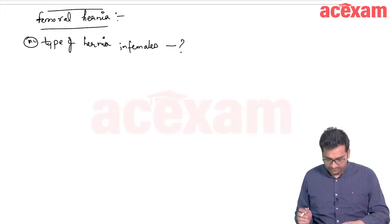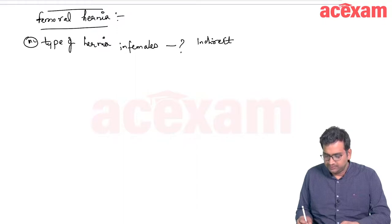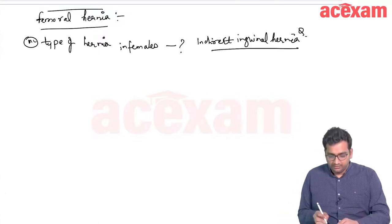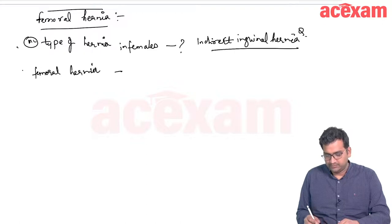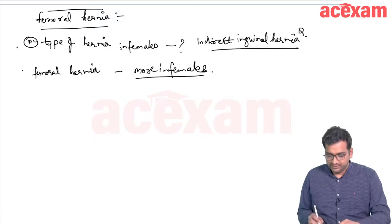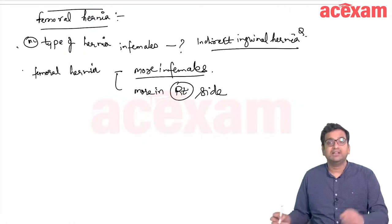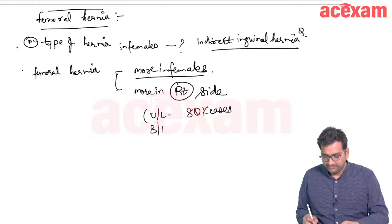The next topic is femoral hernia. The most common hernia in females is indirect inguinal hernia. Femoral hernia is more common in females but is not the most common hernia. Femoral hernia is more common on the right side and is unilateral in 80% of cases and bilateral in 20%.